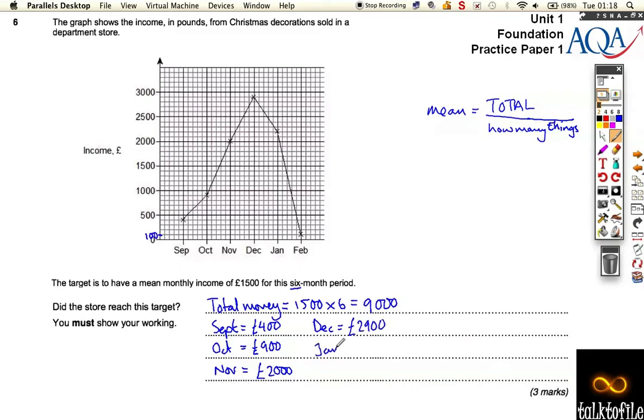In January, reading off our graph again, reading up, January is £2,200. And February, they only took, the first little square up was £100, not a very good month.